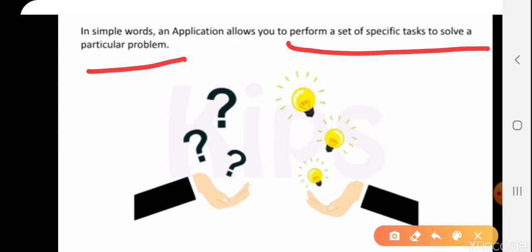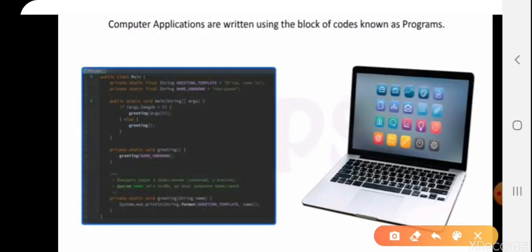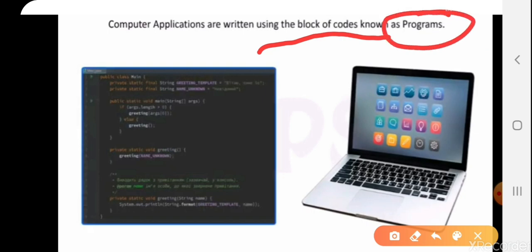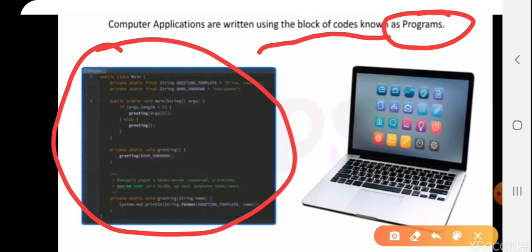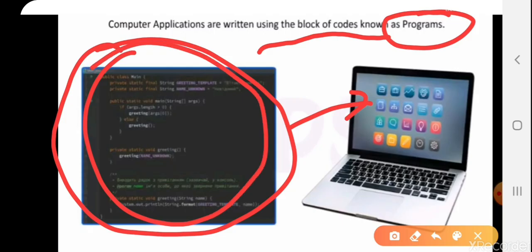You do calculations with the calculator — so it is an app or application that we use to solve a specific task, that is, the calculation. Computer applications are written using blocks of code which are known as programs. This block of code is a program. So all these applications inside the computer are nothing but blocks of code.